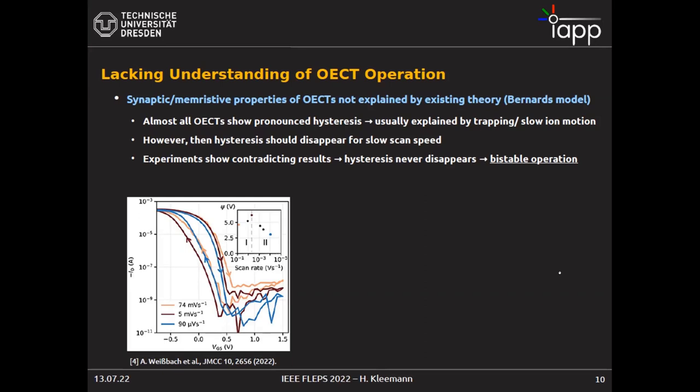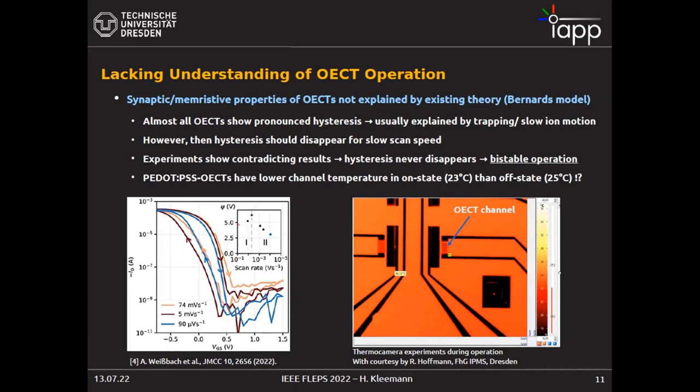Another interesting thing we stumbled upon when doing very primitive measurements: we looked at the devices with a thermal camera to check whether we see any hotspots. Very surprisingly, in the off state the device was at 25°C, but when we turned on the device and had lots of current running through it, it actually cooled down. This is completely odd because you would expect the device to get hot — in fact it's cooling down.